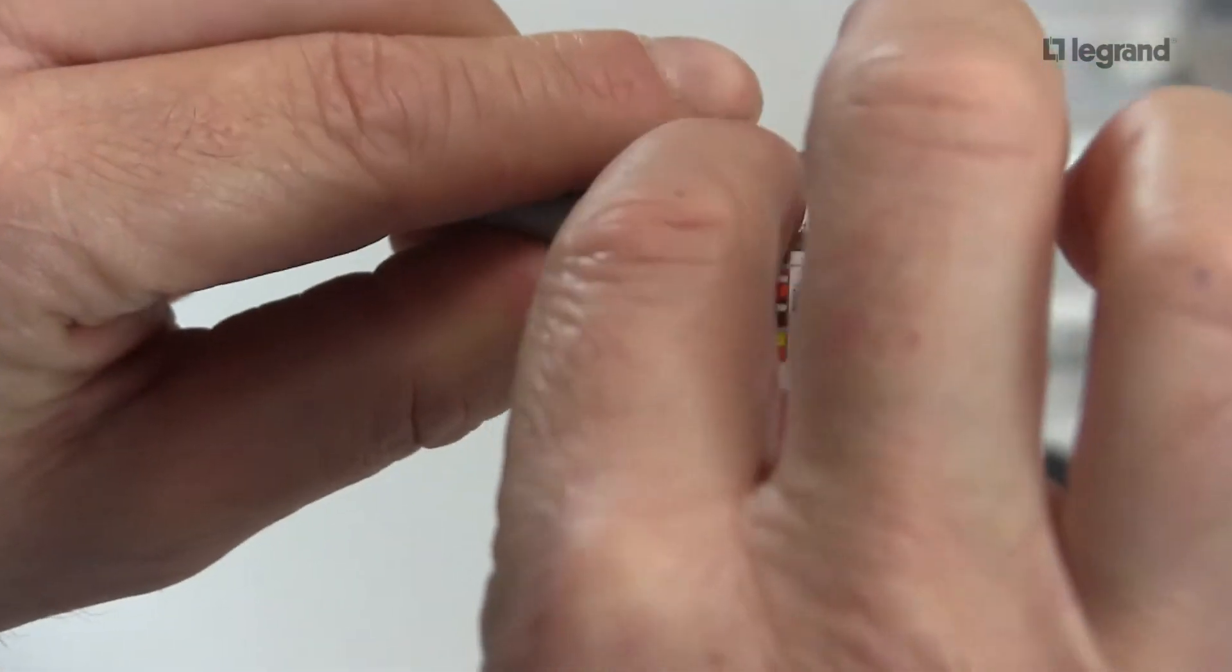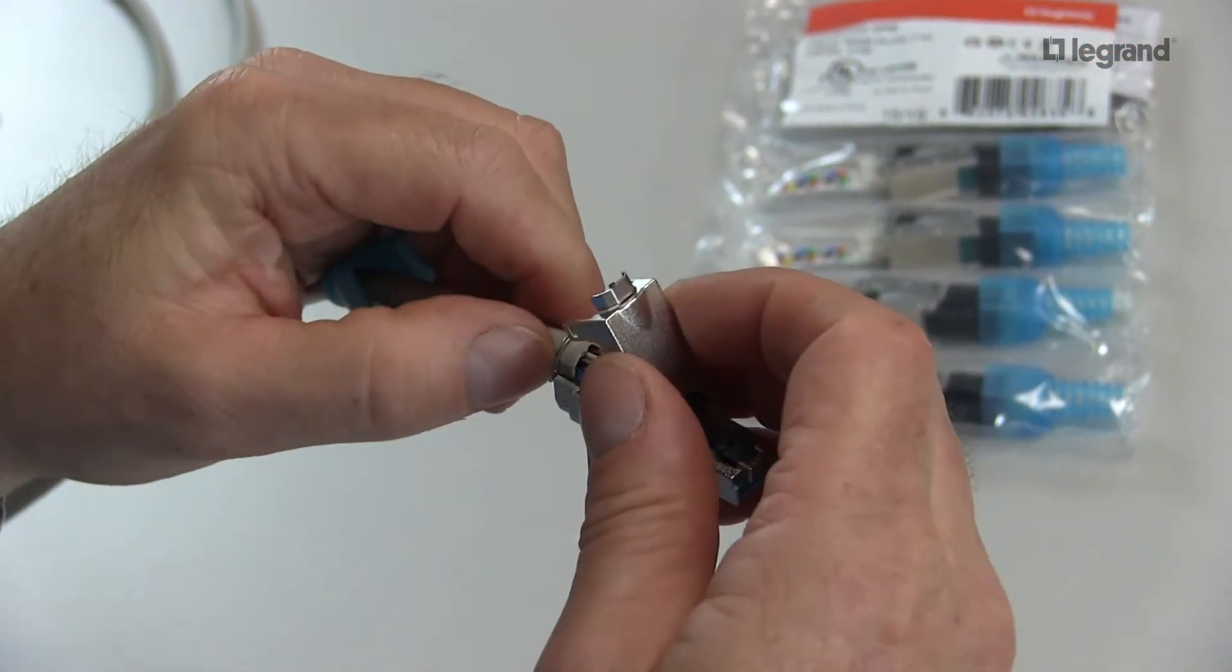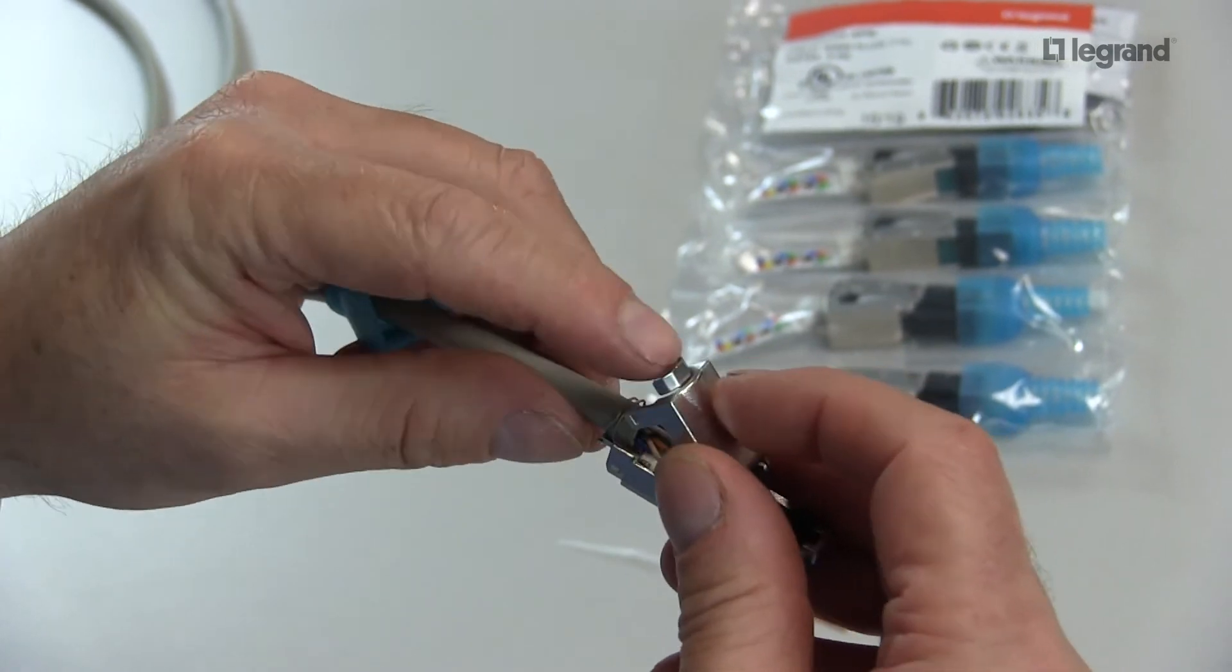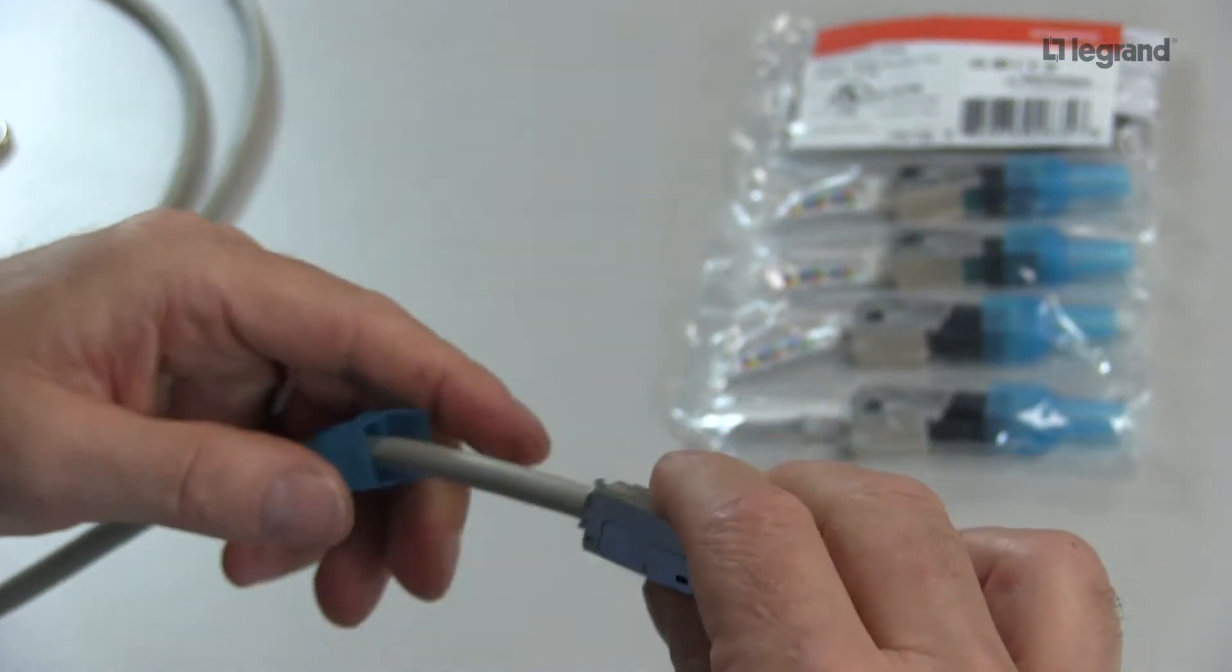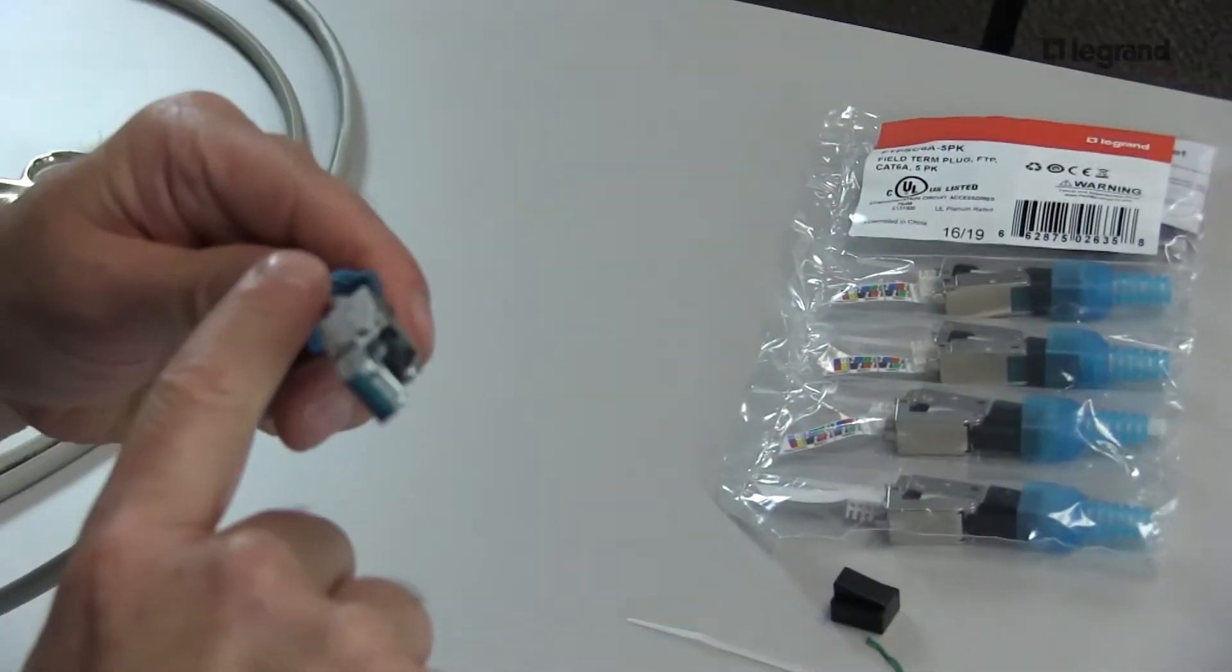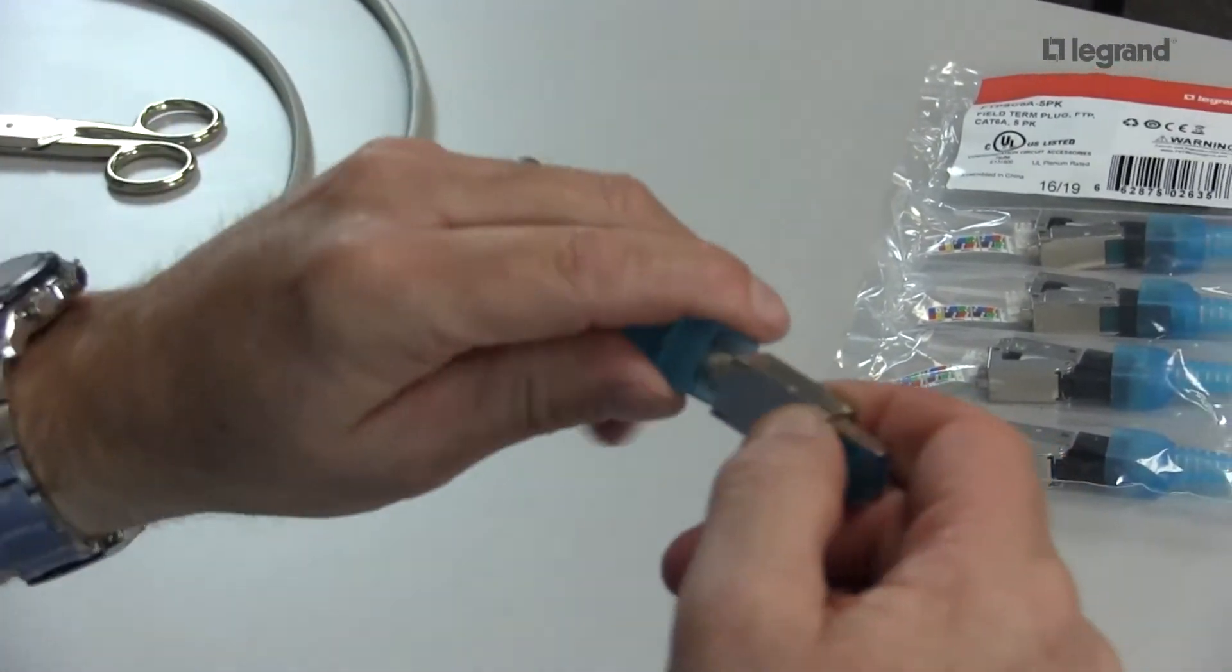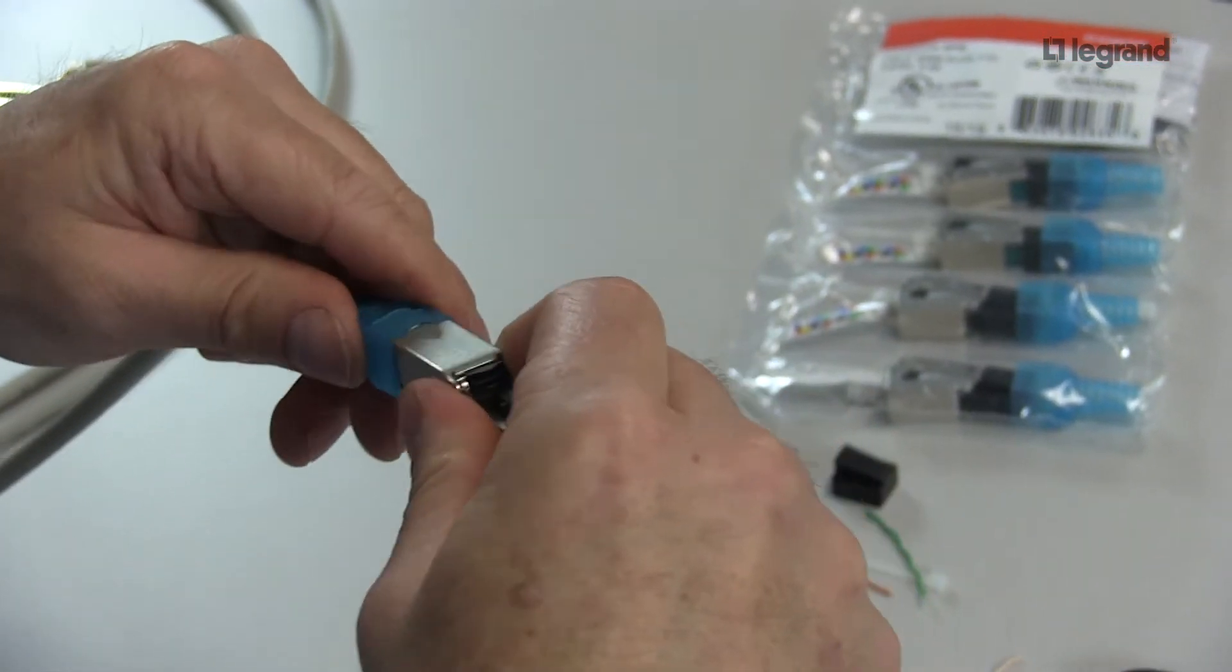At this point, you can pull off your color code tab and lock your jack into place. You will notice your drain wires are touching the shield of the jack. Just like so. Bring your boot up. There is a rounded part of this boot, which will wrap around the rounded part of your jack.